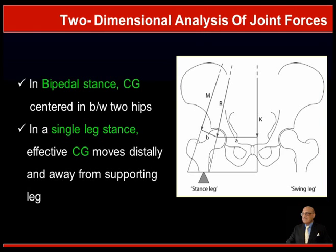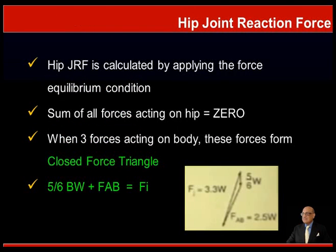In the two-dimensional analysis of joint reaction forces, in a bipedal stance the center of gravity is centered between the two hips. In a single leg stance, the effective center of gravity moves distally and away from the supporting leg. The hip joint reaction force is calculated by applying the force equilibrium condition, which is the sum of all forces acting on the hip leading to zero. When three forces act on the body, these forces form a closed force triangle.